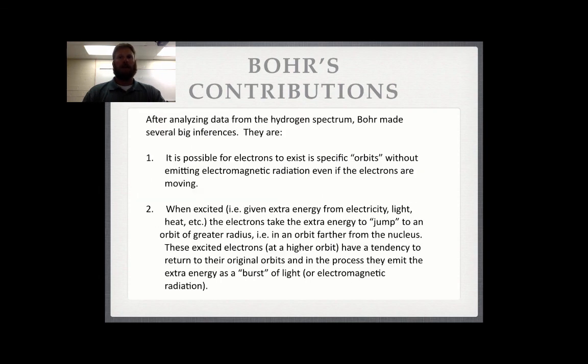Bohr's inferences include that it is possible for electrons to exist in certain orbits without emitting electromagnetic radiation. In other words, electrons won't crash into the nucleus. Furthermore, when an electron absorbs energy or gets excited, it is able to jump to an orbit farther away from the nucleus. Electrons do not stay excited for long. When the excited electron relaxes to its original orbit, it will emit energy in the form of light, or another type of electromagnetic radiation. The emitted energy is responsible for producing the spectral lines.